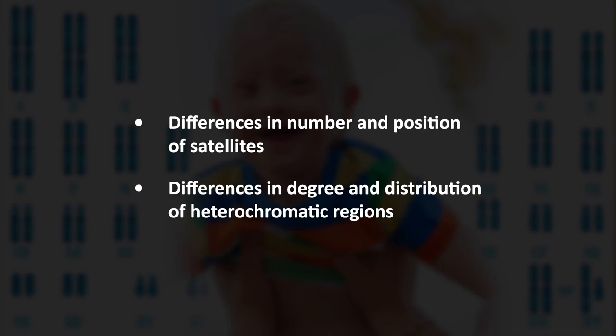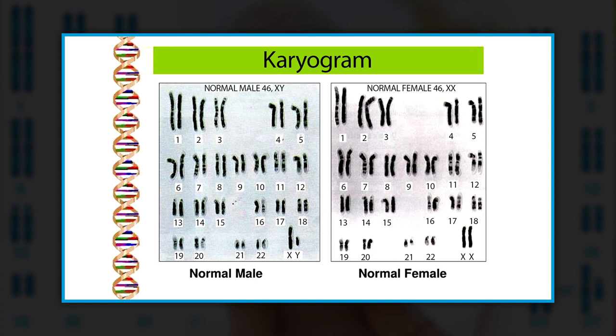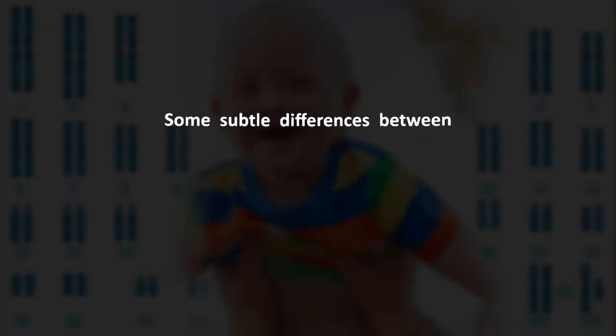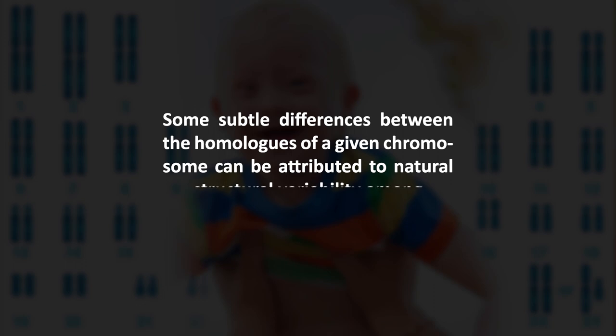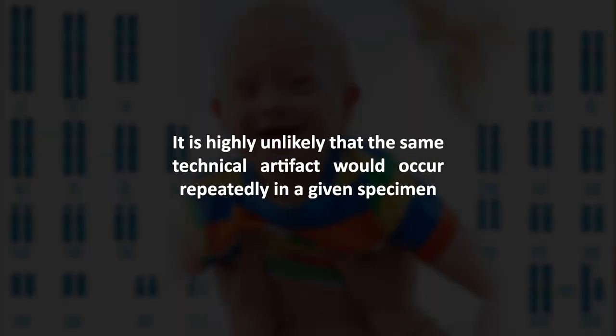Fifth is differences in the number and position of satellites. Sixth is differences in the degree and distribution of heterochromatic regions. Arranging chromosomes into a karyogram can simplify the identification of any abnormalities. The banding patterns between the two homologues of any autosome are nearly identical; subtle differences can be attributed to natural structural variability among individuals. Occasional technical artifacts associated with chromosome processing may generate apparent differences between homologues, but these can be identified by analyzing metaphase spreads, as it is highly unlikely the same artifact would occur repeatedly.